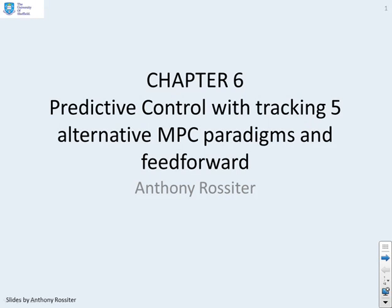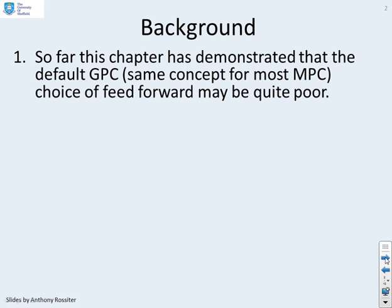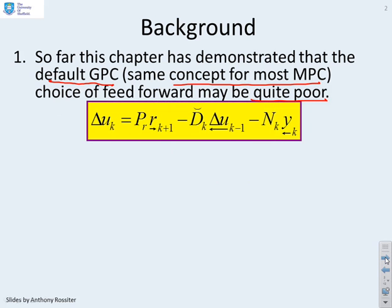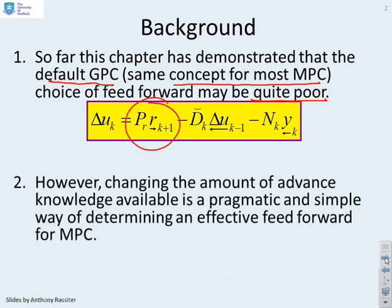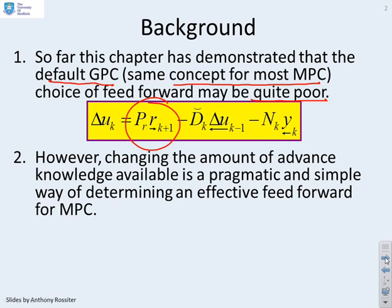This video is a slight aside from the main focus of this chapter and looks at alternative ways of setting up an MPC and whether they can help with the feedforward design. So far in this chapter we've demonstrated that the default feedforward you get from algorithms like GPC — and the same will apply for most predictive control algorithms — may be quite poor. Changing the amount of advanced knowledge available is a pragmatic and simple way of determining an effective feedforward: you only allow yourself NA samples of future information about the target, where NA is less than NY, usually much less than NY.